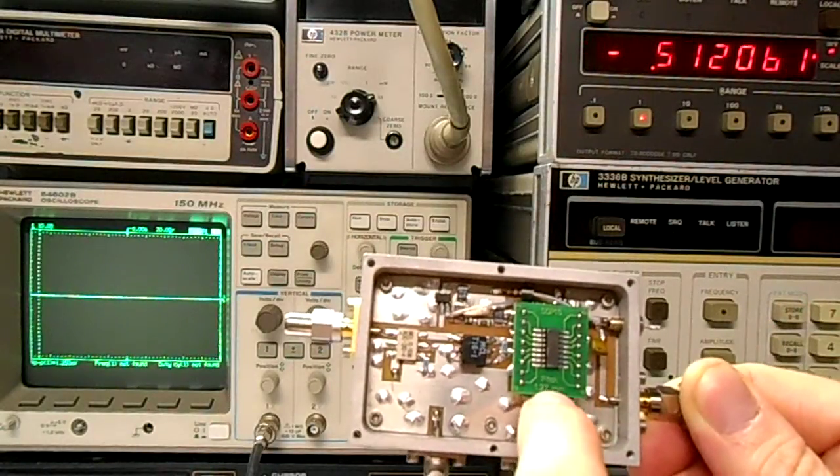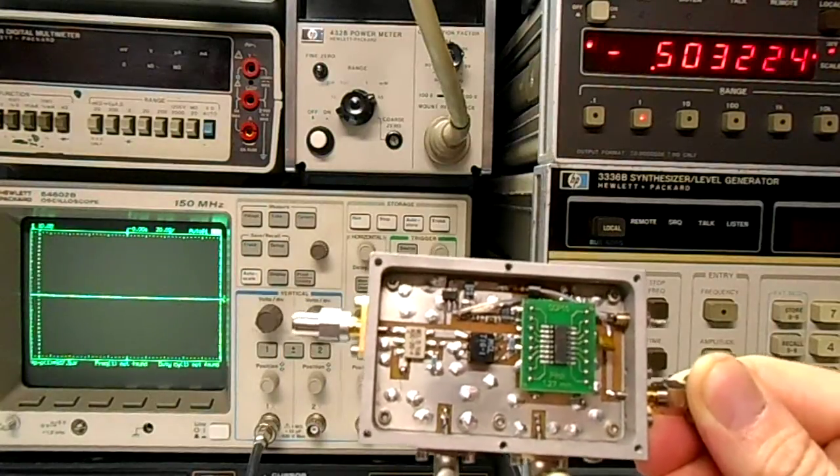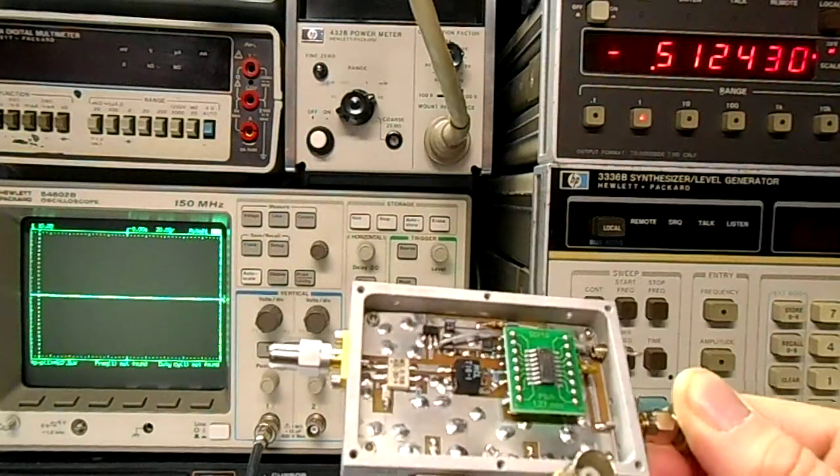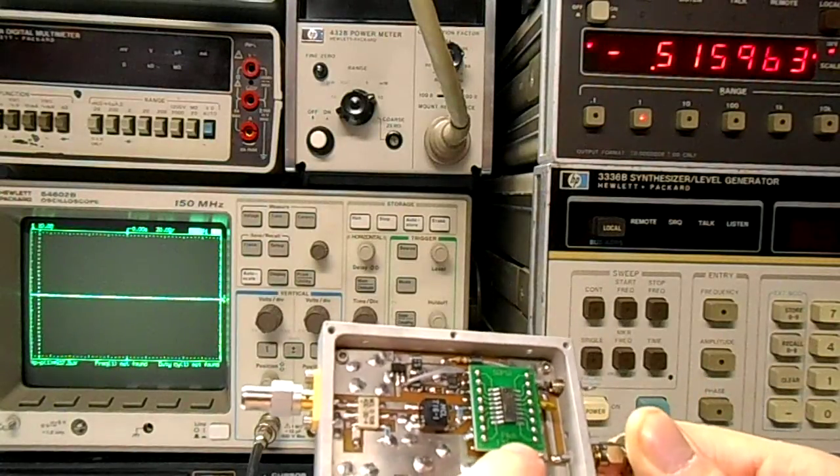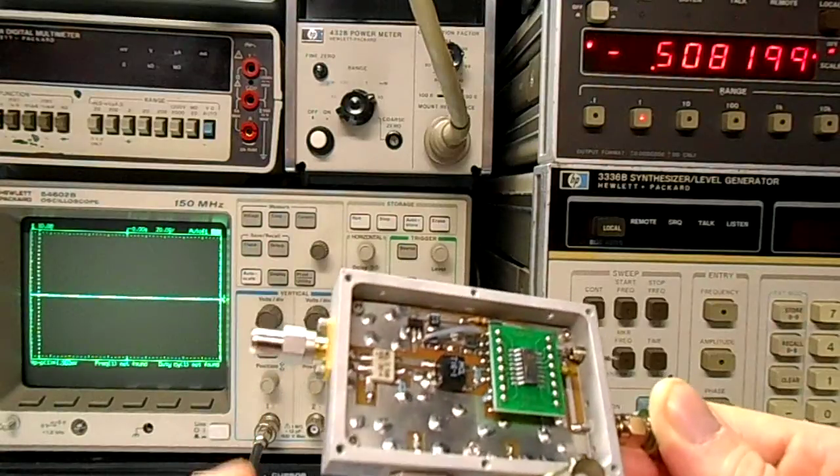The logarithmic detector is an analog device that is the AD8306. It is a surface mount device and I did add a little SOP to DIP carrier board just to ease the construction.